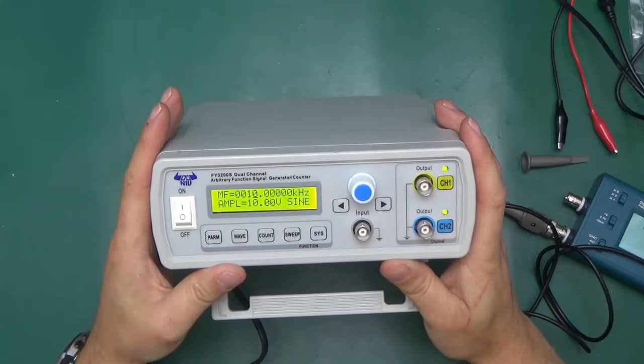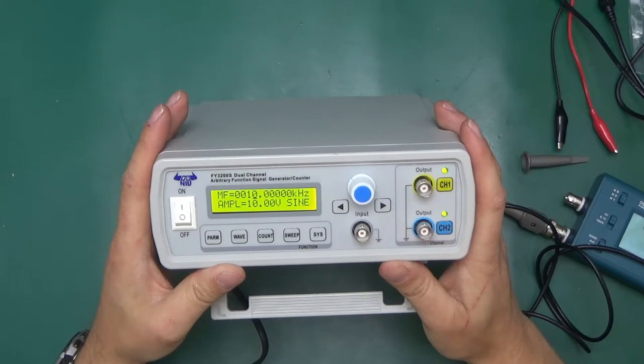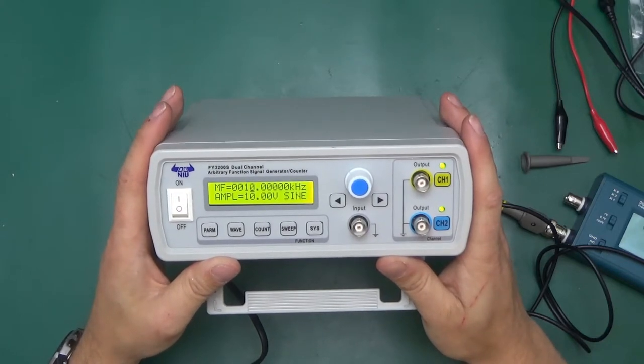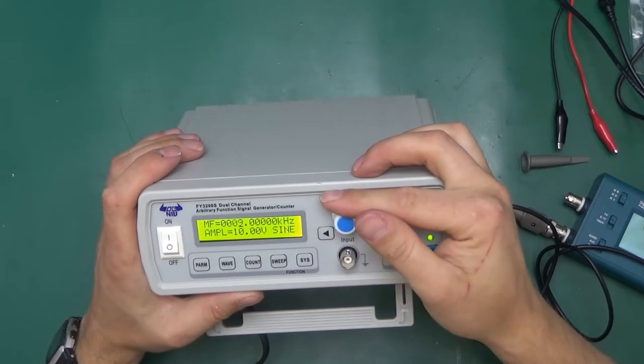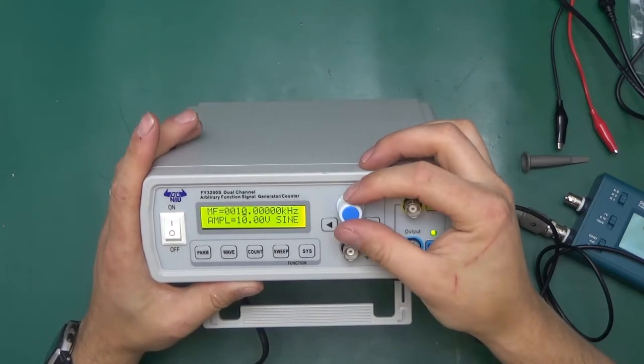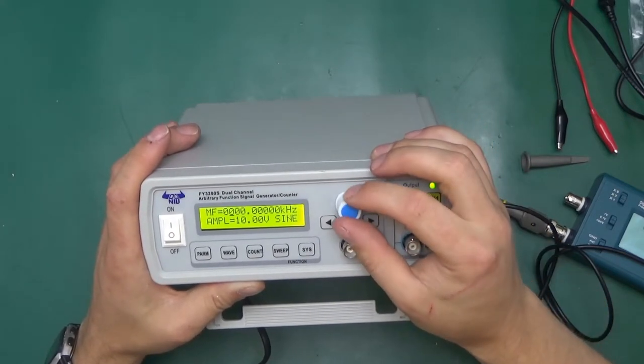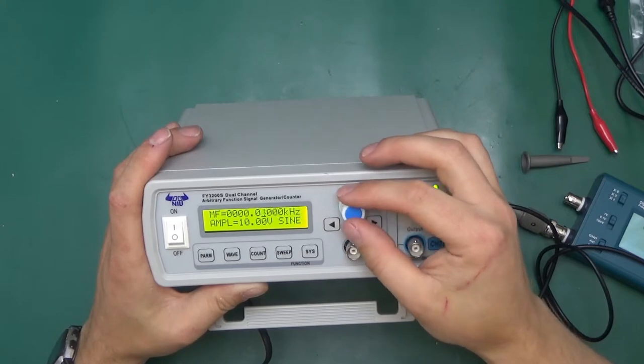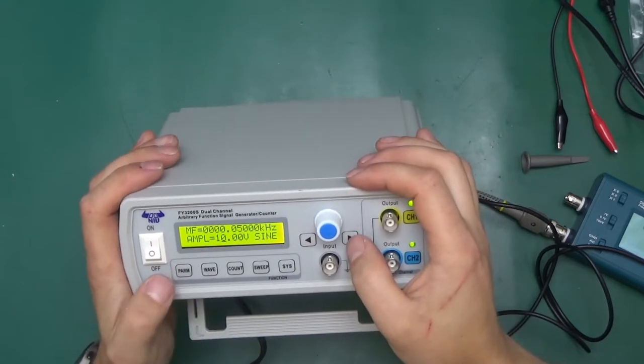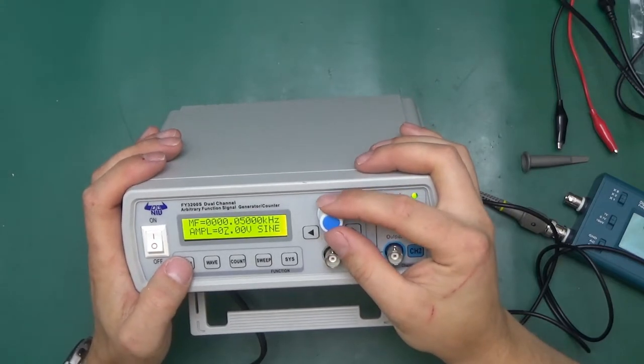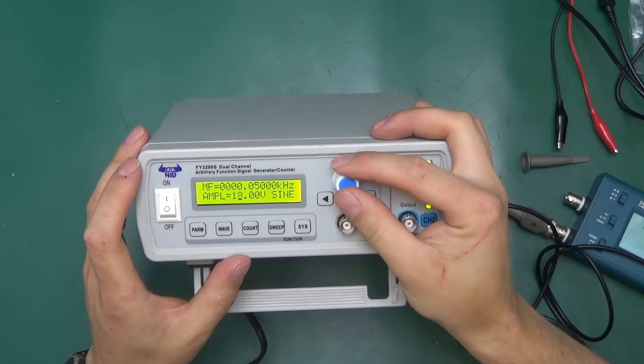And we get FY3224S. Main frequency 10 kilohertz, amplitude 10 volts sine. So I guess that's what we get on the output. The beep is a little bit sad. With those buttons we can switch the digits. Would it roll over if we go above? Yes it does, that's good. This will allow us to change the amplitude. So it goes up to 20 volts on the output.